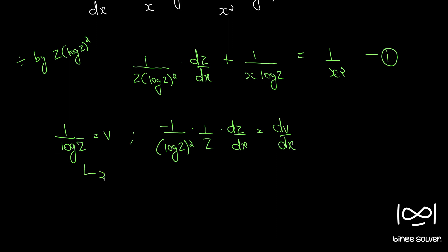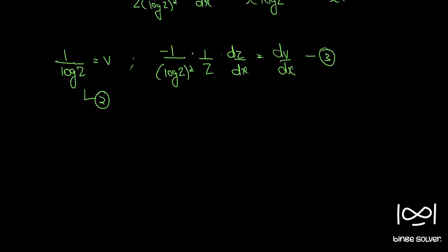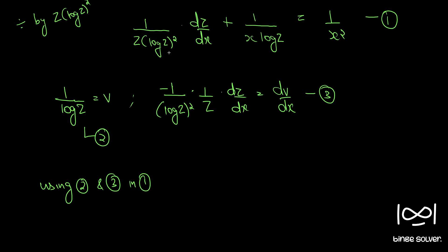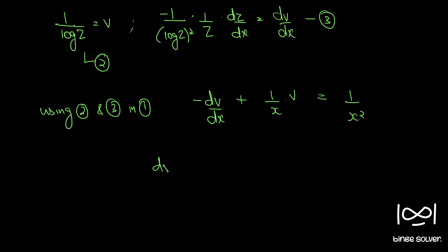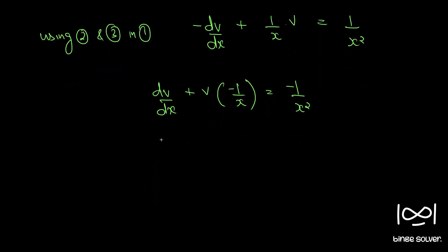Calling these equations one, two, and three — using equations two and three in one, we have: (1/z)·(log z)² · dz/dx becomes minus dv/dx. So minus dv/dx plus (1/x)·v equals 1/x². Rewriting: dv/dx plus v·(minus 1/x) equals minus 1/x². This is the standard form of a linear differential equation dv/dx + v·P = Q, where P = minus 1/x and Q = minus 1/x², both functions of x alone.